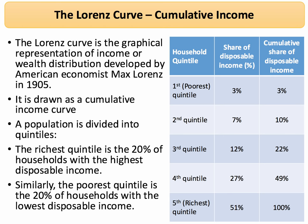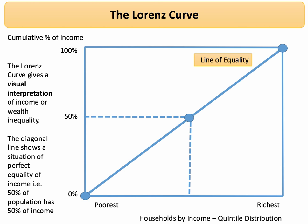What you then do is plot that cumulative curve across the income distribution of households. The Lorenz curve provides a nice visual representation of inequality. On the y-axis you have cumulative income up to 100%, and on the x-axis from left to right we go from the poorest quintile through to the richest.